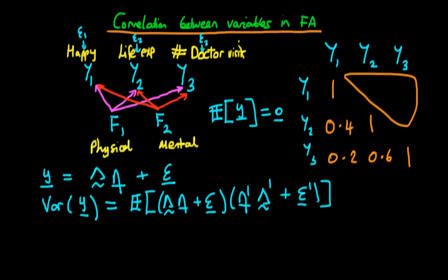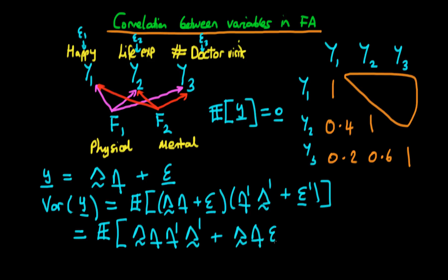Essentially what we're doing is coming up with how our model explains the variance and covariance between these observed variables in terms of these factors. At the end of the last video we had that the variance of y, the variance of our observed variables, is equal to the expectation of this right-hand side term. Multiplying that out, we have the expectation of lambda times eta times eta primed times lambda primed, plus lambda times eta times epsilon primed, plus epsilon times eta primed times lambda primed, plus epsilon times epsilon primed.